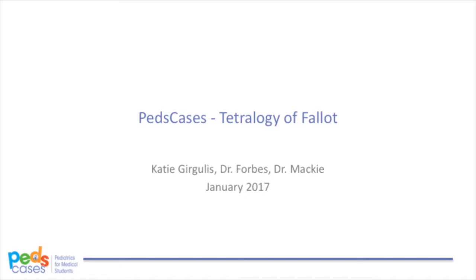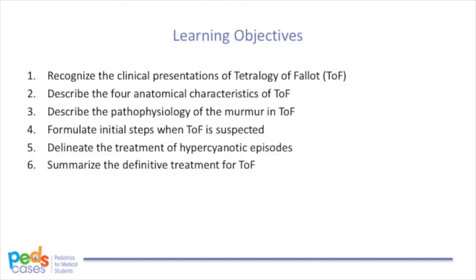For teaching on the general approach to pediatric heart murmurs, please check out the Evaluation of a Heart Murmur podcast on pcases.com. By the end of this podcast, the learner will be able to: 1. Recognize the clinical presentations of Tetralogy of Fallot. 2. Describe the four anatomical characteristics of Tetralogy of Fallot. 3. Describe the pathophysiology of the murmur in Tetralogy of Fallot. 4. Formulate initial steps when Tetralogy of Fallot is suspected. 5. Delineate the treatment of hypercyanotic episodes.